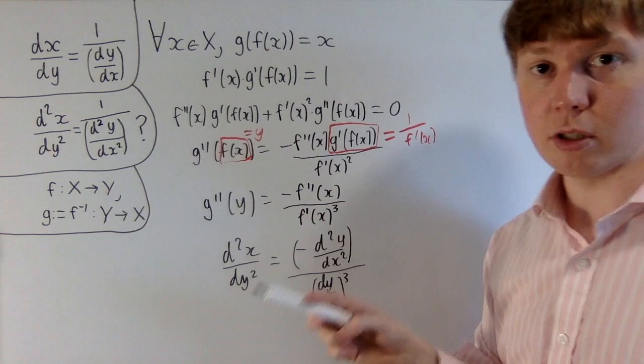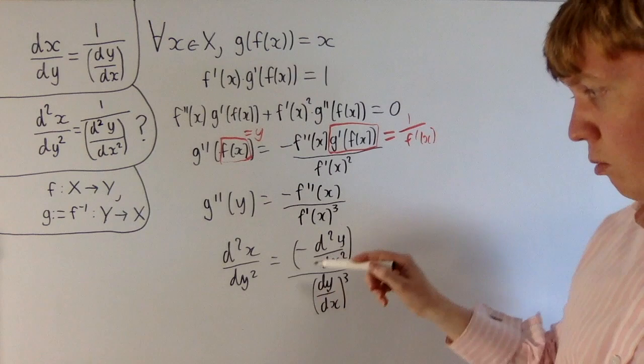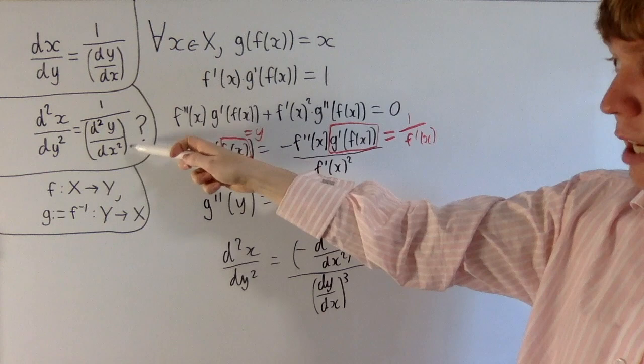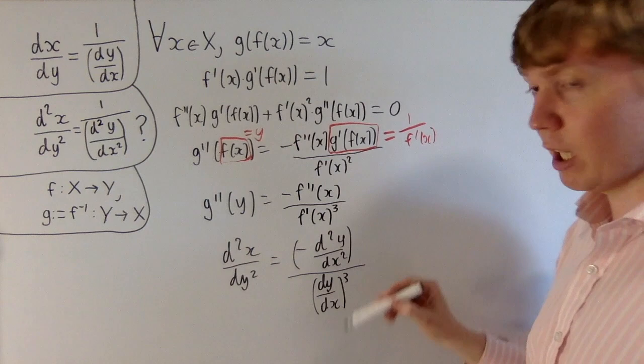If you wanted to find these functions, basically, because you know d²x/dy² is equal to this, if you wanted it to also be equal to the reciprocal, you'd just set 1/(d²y/dx²) equal to -d²y/dx²/(dy/dx)³. Then solve this as a differential equation, if you like.